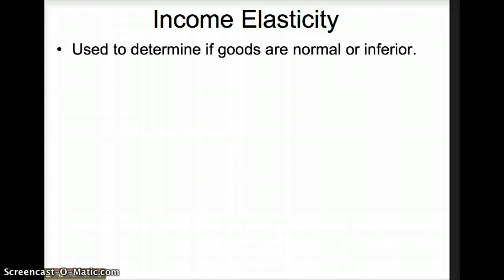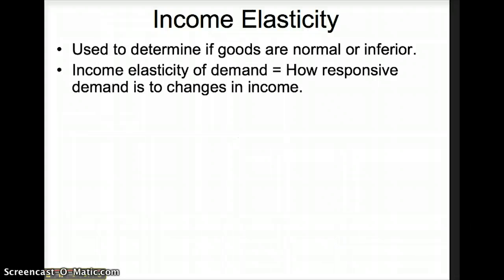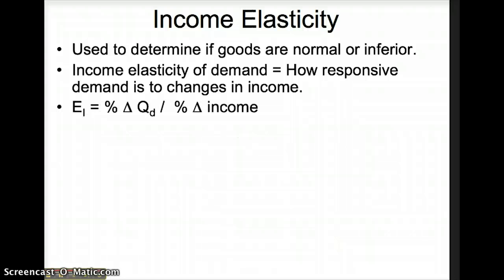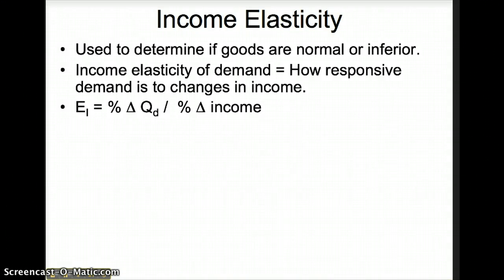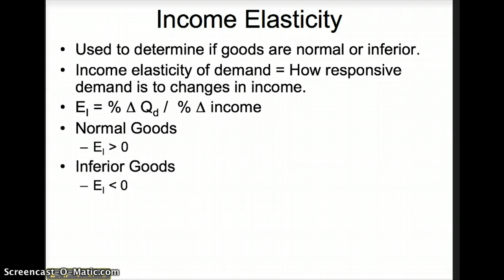Income elasticity is the next type of elasticity. Income elasticity is used to determine if goods are normal or inferior. As income increases, demand for normal goods will rise, and as incomes increase, demand for inferior goods will fall. Income elasticity of demand measures how responsive demand is to changes in income. The formula is the percentage change in quantity demanded divided by the percentage change in income. For normal goods the coefficient will be positive; for inferior goods the coefficient will be negative.